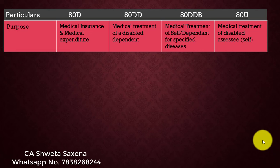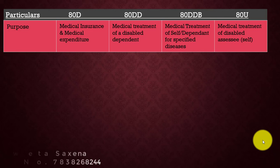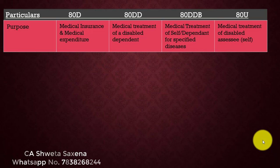In all 4 sections, diseases have been specified in different sections. If you claim a deduction in any section, you should have a certificate from a medical practitioner or a certificate from a hospital, or you should have bills. An important prerequisite is that payment should not be in cash — it must be through a banking mode such as UPI, Net Banking, cheque, or draft.